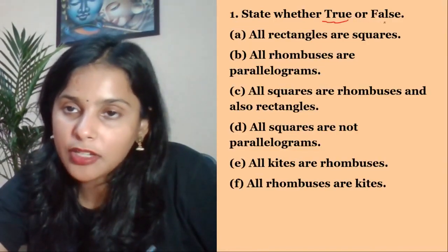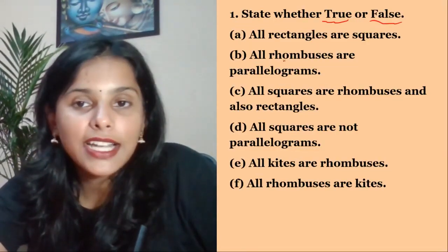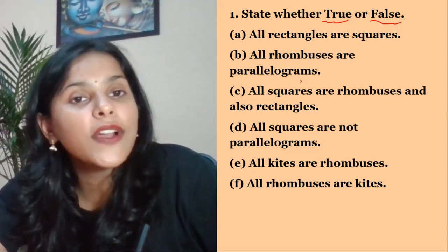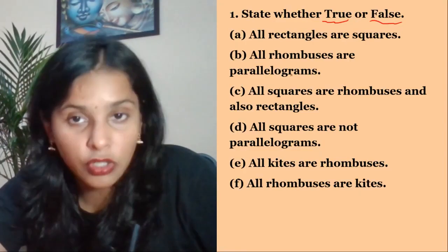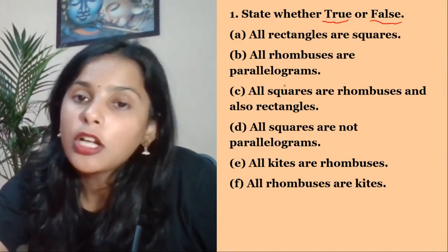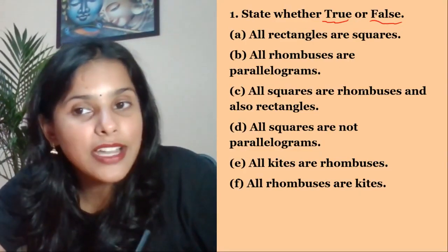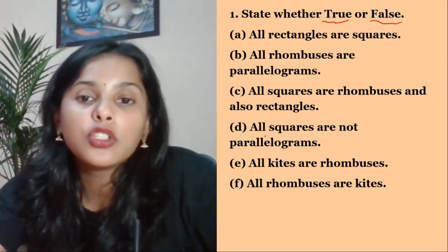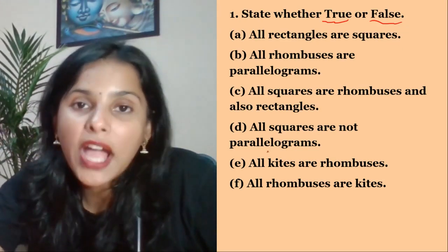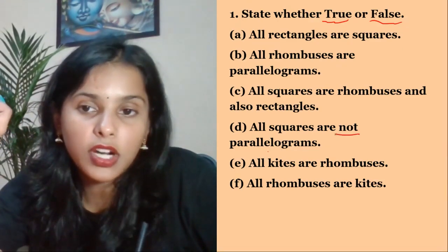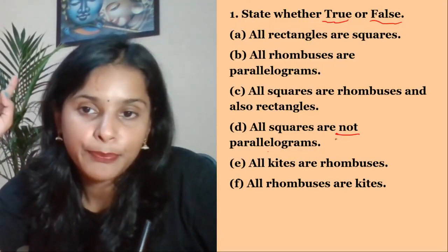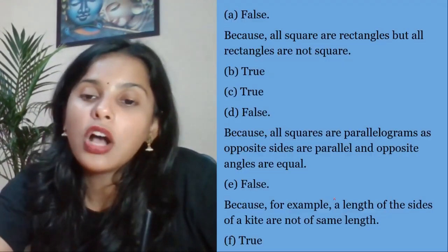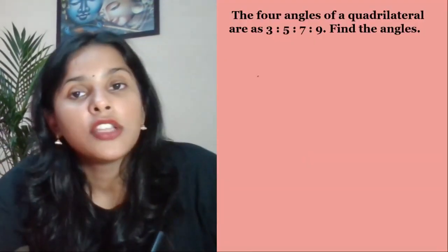Question 4: State true or false. All rectangles are squares — False, because all squares are rectangles but not all rectangles are squares. All rhombuses are parallelograms — True. All squares are rhombuses and also rectangles — True. All squares are not parallelograms — False. All kites are rhombuses — False. All rhombuses are kites — True.